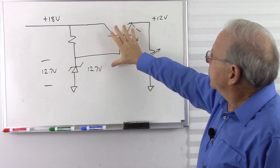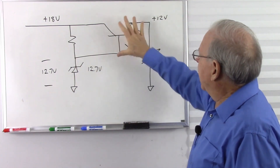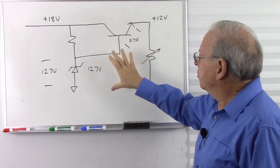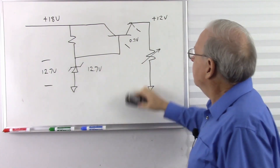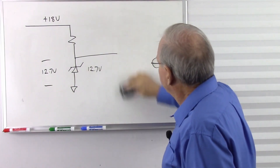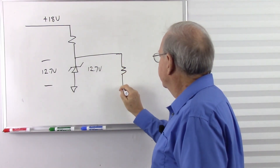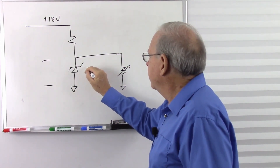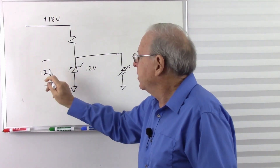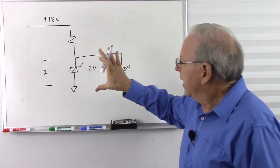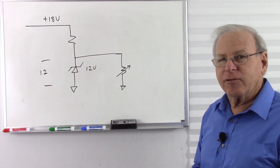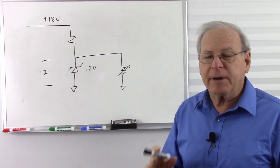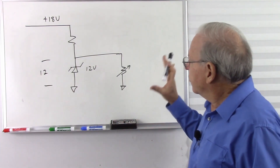So there's the basic series regulator: reference voltage, pass transistor, and load. The question is: can we simply eliminate the transistor and put the load directly across the Zener? We have a known voltage that doesn't change there — why not move the load there and eliminate the transistor? If we want 12 volts we just change to a 12-volt Zener diode, and we'd have 12 volts in parallel. Would that work? The answer is yes — what we have is called a shunt regulator. I do talk about shunt regulators in the power supply series, but it never hurts to talk about things more than once.